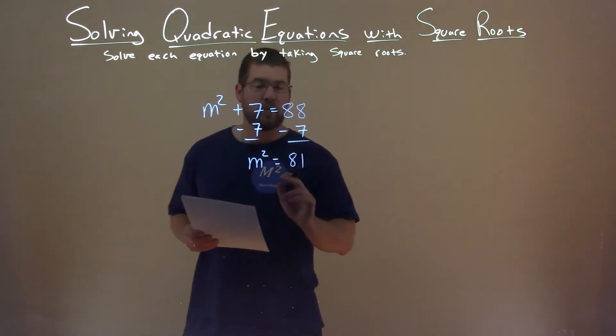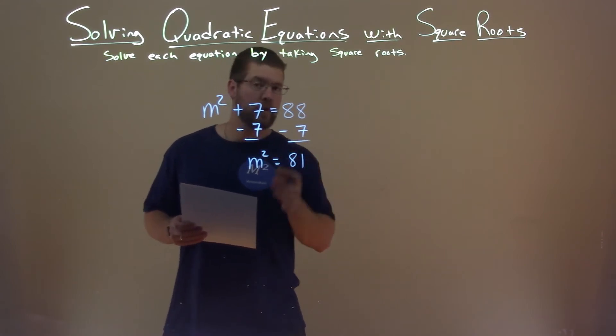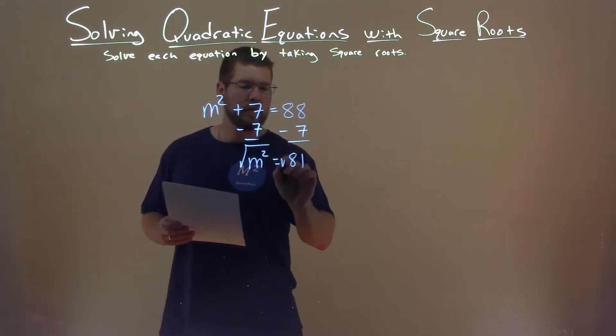Well now we have m squared equals 81. To get rid of that squared value, we need to take the square root of both sides. Square root here, square root there.